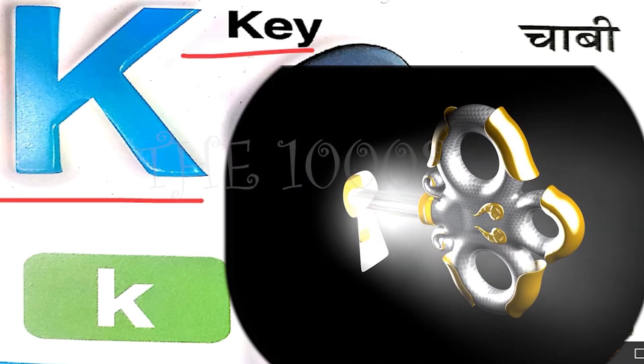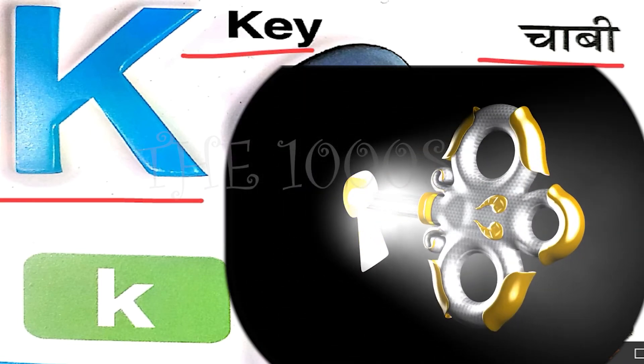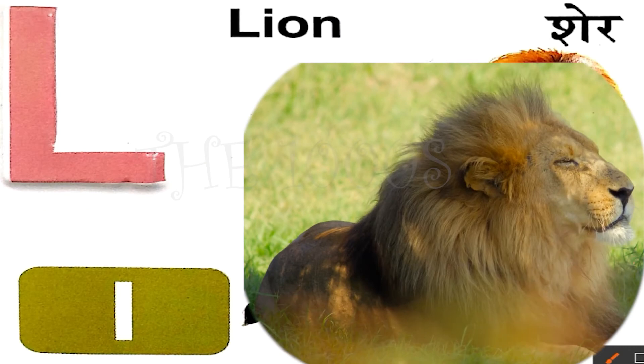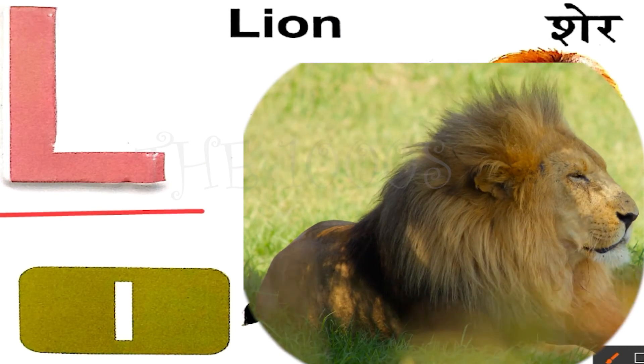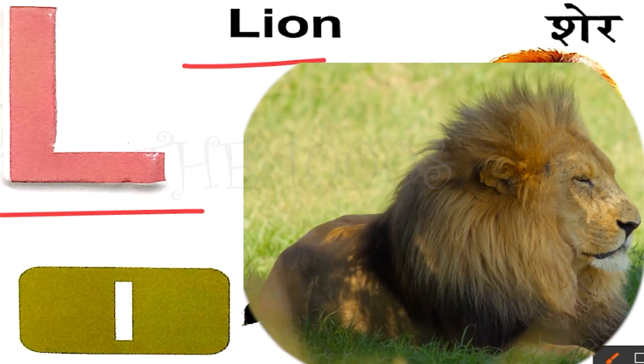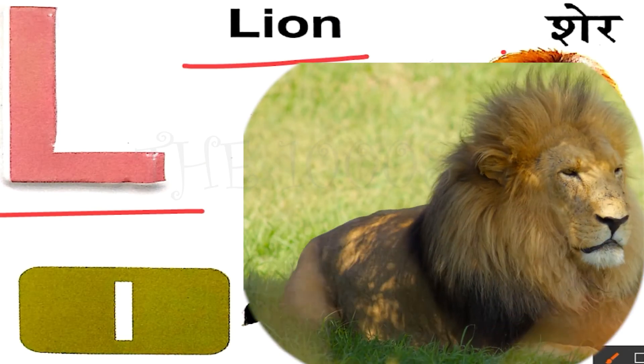K for key, key means chabi. L for lion, lion means sher.